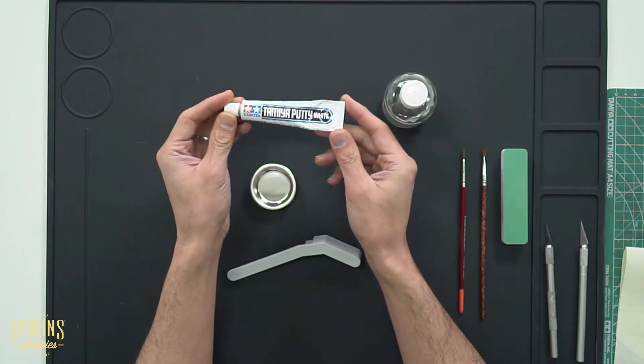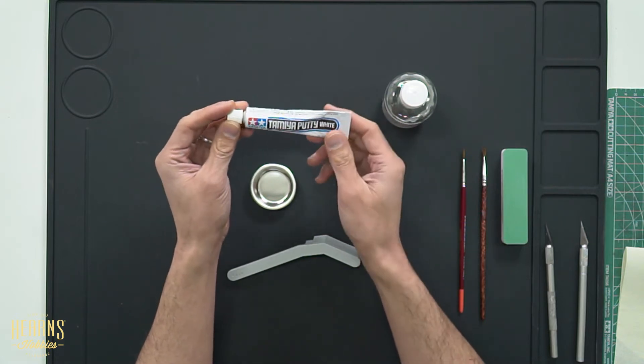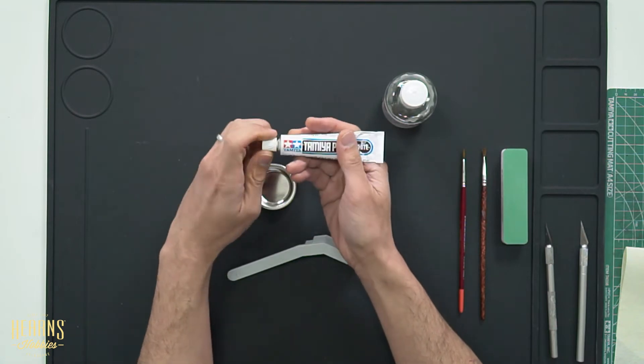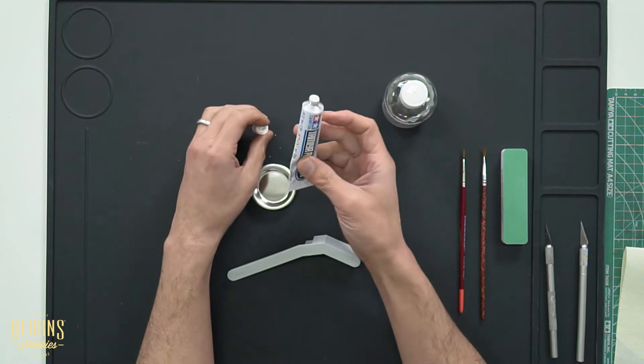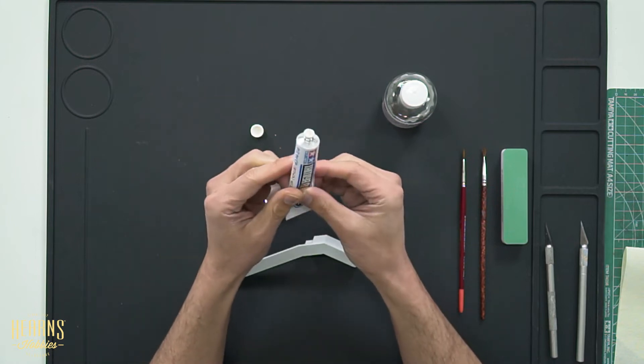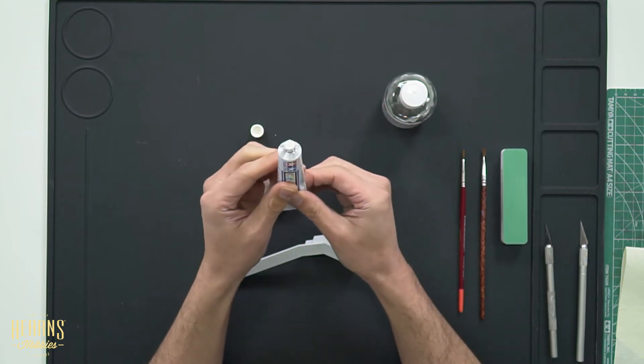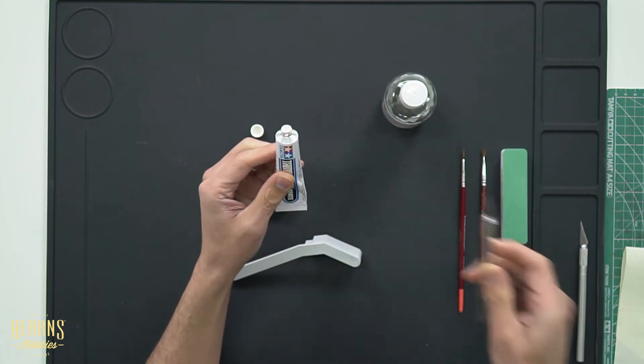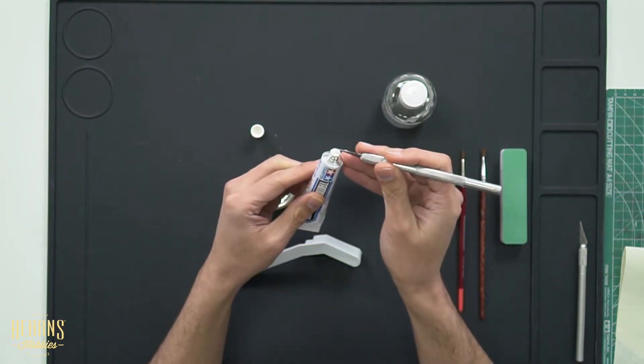Now I've probably shown how to use this type of putty in other tutorials before but we'll focus on this by using it by itself. So when you open them up you can see that it's very much like a toothpaste type dispenser. You just squeeze it and it comes out the tip. I'll just get an old blade here and scrape a bit off the top.